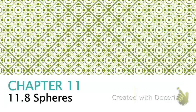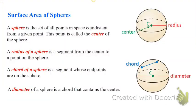We're going to talk about spheres today and the surface area of a sphere. A sphere, like a globe, is a set of all points in space — instead of in a plane — that are equal distance to a center. The radius of a sphere is a segment from the center to the end of the sphere. A chord of a sphere is a segment whose endpoints are on the sphere. And a diameter of a sphere goes through the center from one end of the sphere to the other.